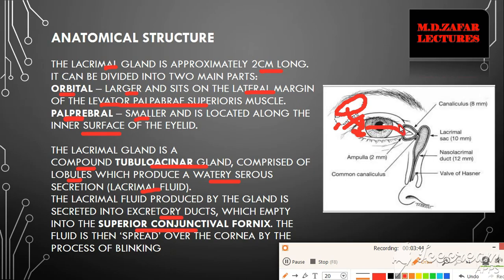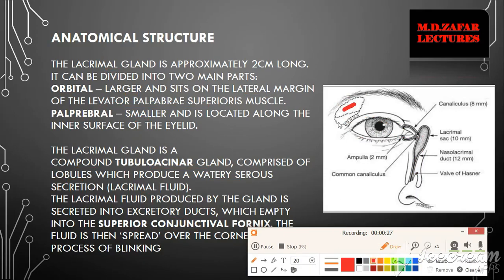The fluid flows from the superior conjunctival fornix through lacrimal passages, which drain it down into the nose via the inferior meatus. When this fluid is produced, it is spread over the eye by means of blinking. By blinking, it moves to the medial canthus, from where the lacrimal passages drain it down to the nose through the inferior meatus.